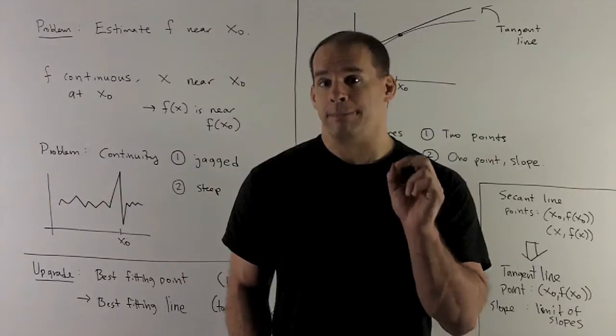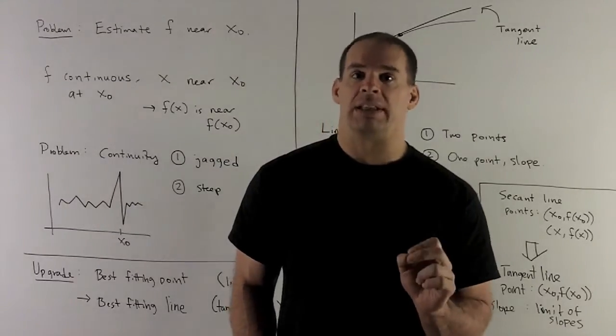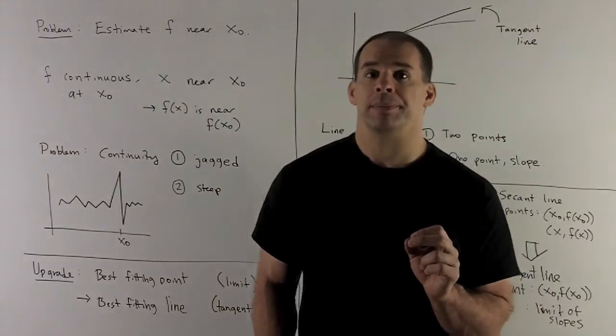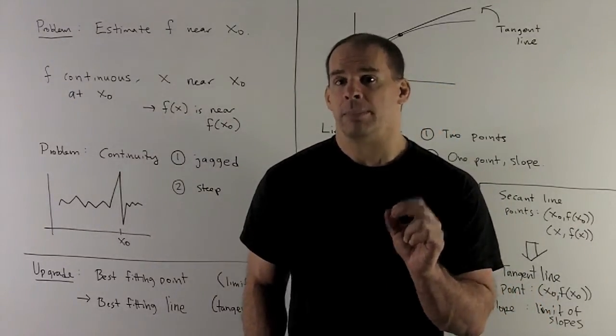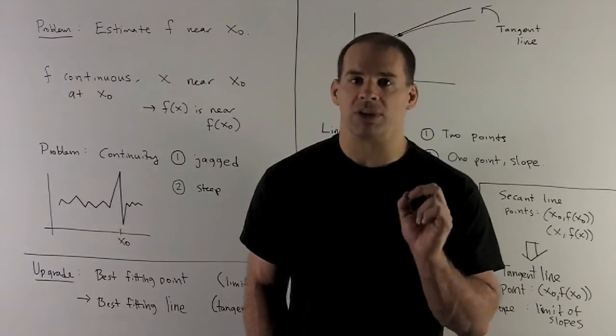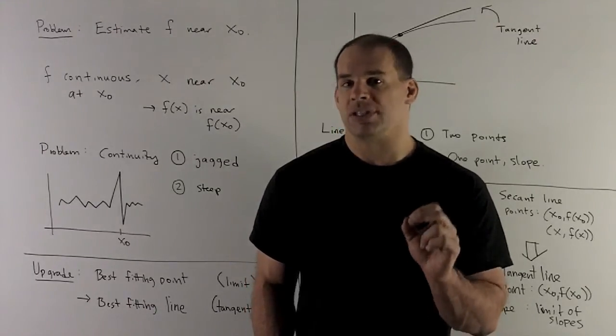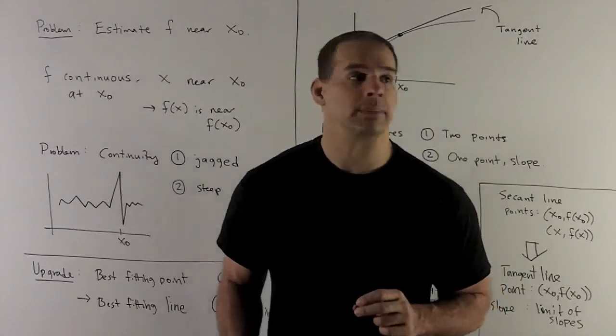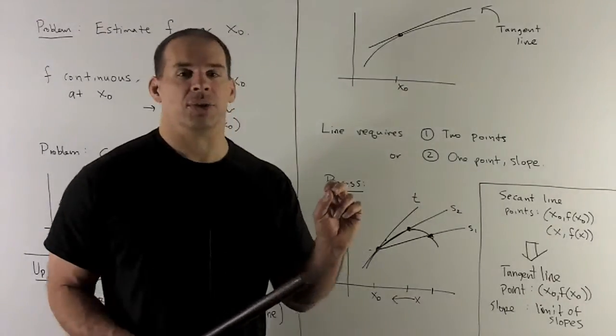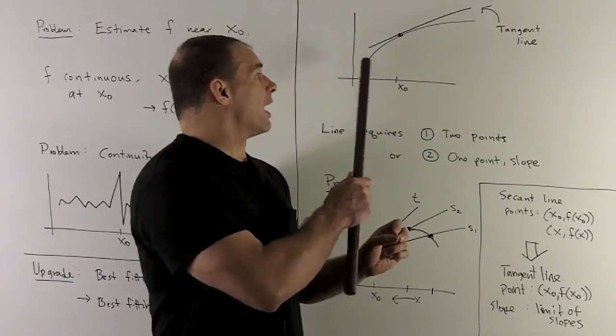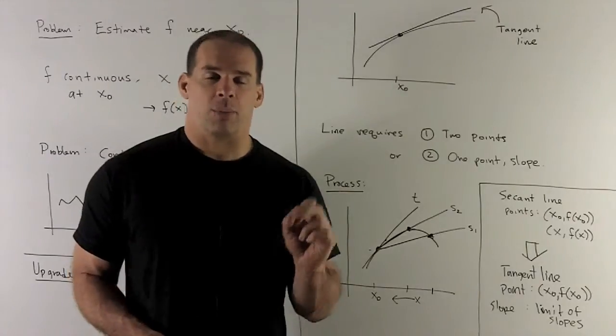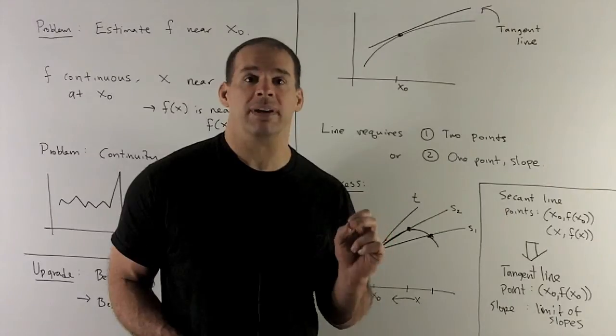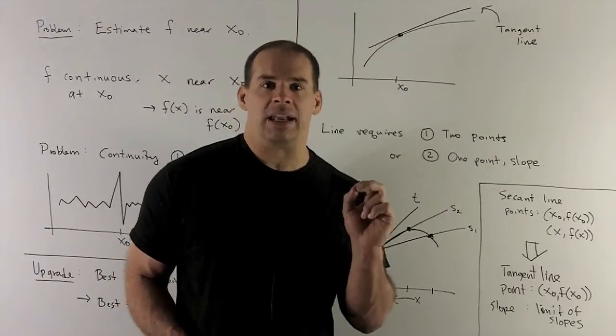So I want to go from best fitting point to best fitting line. We're going to call the best fitting line the tangent line. Sometimes we'll have one, sometimes we won't, but we're going to see what happens when we assume that there is one. So let's take a look at a picture to try to pull apart what we would need to get a best fitting line. So here's my picture. I have my point x0, I have the graph of my function f, and we draw in our tangent line. So that's just going to be the point that hugs our graph the best above x0.